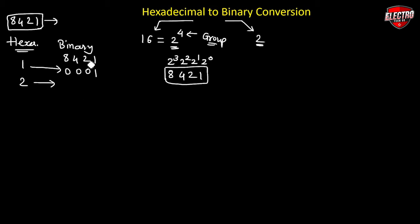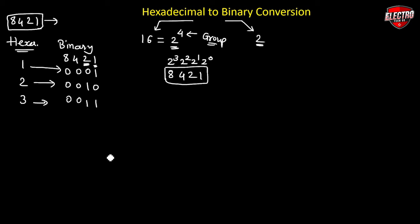For hexadecimal 2, we set the second bit to 1 and the remaining bits to 0, giving 0010. For 3, we use 2 plus 1, so two bits are 1, giving 0011. For 4, we use only the 4-bit position, so we place 1 at the 4-position and the remaining bits are 0, giving 0100.